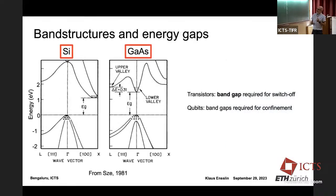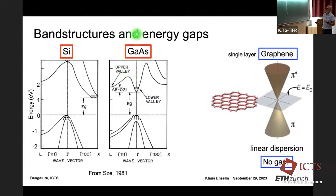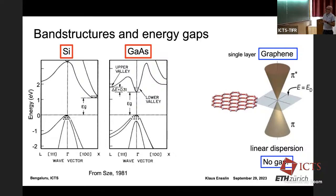This book shows the band structure of silicon with an indirect gap and gallium arsenide with a direct gap — these gaps are important for transistors, lasers, and so forth. If you look at the band structure of graphene, you see the famous linear dispersion — it has no band gap. So at first glance it's a useless system to build a transistor, because you can't switch it off.